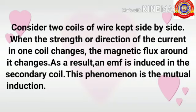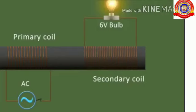Let's see the definition of mutual induction. Consider two coils of wire kept side by side. When the strength or direction of the current in one coil changes, the magnetic flux around it changes. As a result, an EMF is induced in the secondary coil. This phenomenon is mutual induction. In the presence of a soft iron core, we have two coils — the primary coil and the secondary coil. The primary coil provides current for the production of the magnetic field, and the secondary coil produces the induced EMF due to the magnetic flux change.